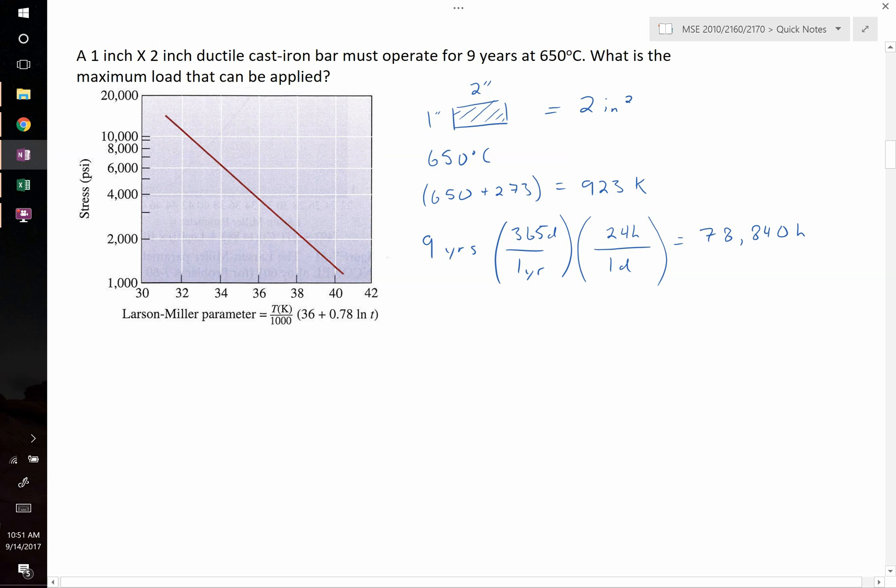Now that we have the temperature in Kelvin, the time in hours, and we know the cross-sectional area, let's figure out our Larson Miller parameter. The Larson Miller parameter equals, using this formula right here, 923 Kelvin divided by 1000, multiplied by 36 plus 0.78 multiplied by the natural log of 78,840. By definition, this time here is in hours.